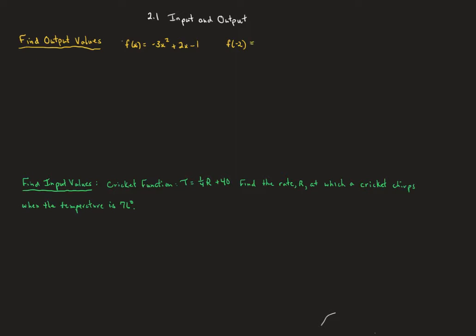So we say f of negative 2 is equal to — we're going to plug in negative 2 everywhere we see the x, then follow our order of operations. Squaring first: negative 2 squared is positive 4, so that's negative 3 times positive 4. Then 2 times negative 2 is negative 4, and we still have that minus 1. Negative 3 times 4 is negative 12, then minus 4 minus 1, so that gets us to negative 17.